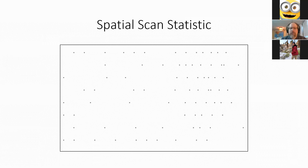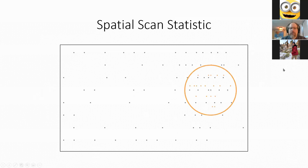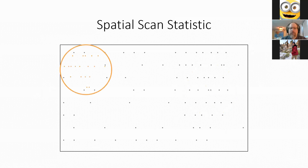The first technique for mapping sentiment is the spatial scan statistic, which locates clusters of points relative to a background rate of other points. For example, if the background rate of neutral tweets is high in the eastern half of a map, finding many positive tweets there wouldn't be surprising. But finding many positive tweets in a low-tweet region would be a much more significant cluster. The spatial scan statistic quantifies the statistical significance of clusters relative to a background rate.